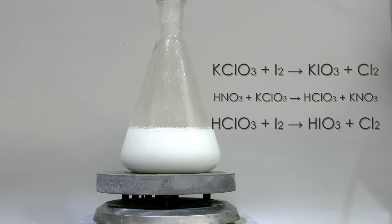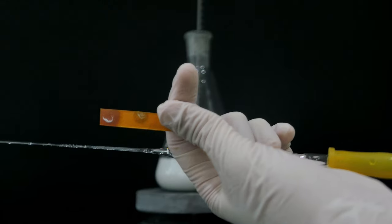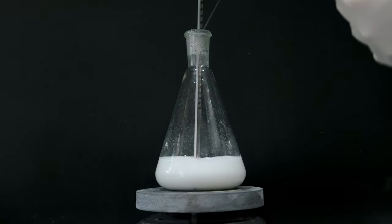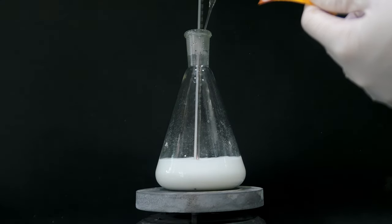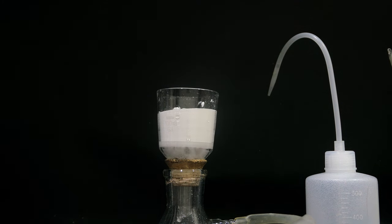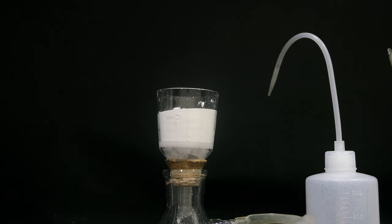After the iodic acid is generated, the solution becomes acidic, and it needs to be neutralized with potassium hydroxide. I am adding the hydroxide solution dropwise until it reaches pH 9. Then the solution is allowed to cool and vacuum filtered, and finally dried in an oven.